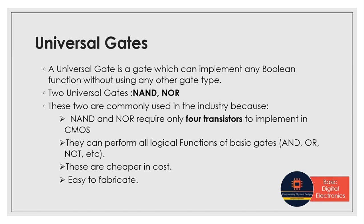Another advantage is that these gates can perform all logical functions of other basic gates. That means using these gates, we can build other logic gates like AND, OR, NOT, XOR, etc. And since they require only four transistors, they are cheaper in cost, so we don't need to spend more money. It is cheaper and also easy to fabricate in the industry.